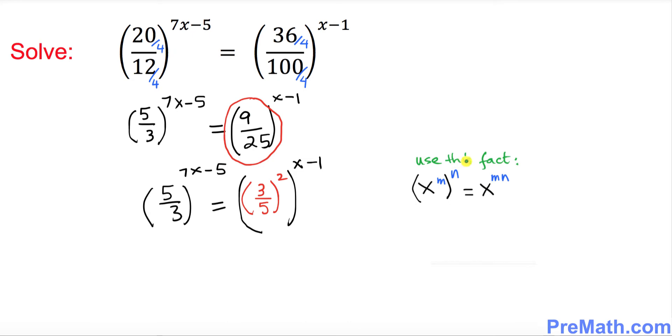Now we're going to use this rule of exponents: if you have x to the power m and another exponent, if you have two exponents you can simply multiply them out. Here we have one exponent 2, and the other exponent is x minus 1. We can multiply them out using this fact.